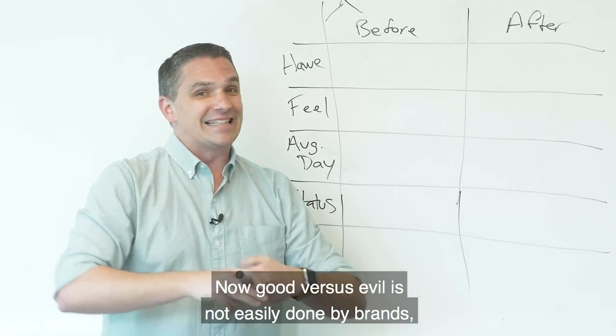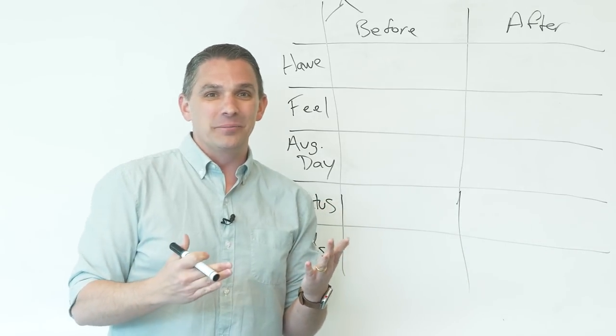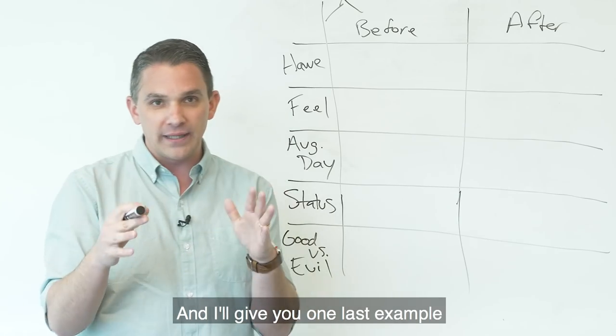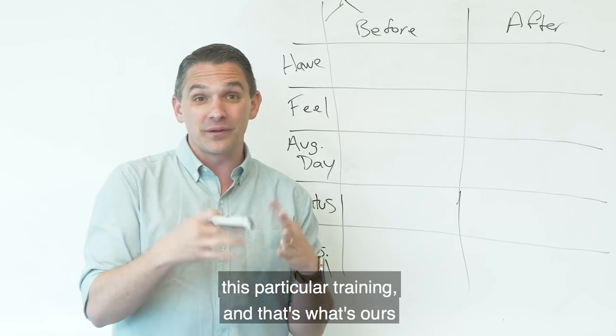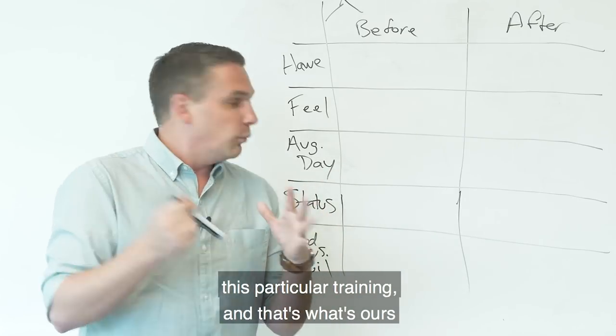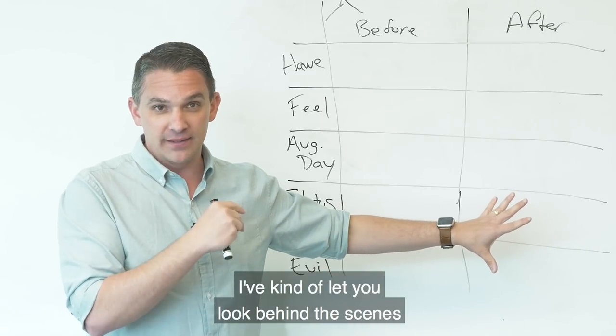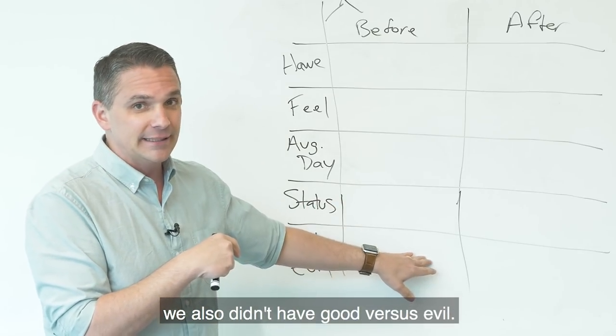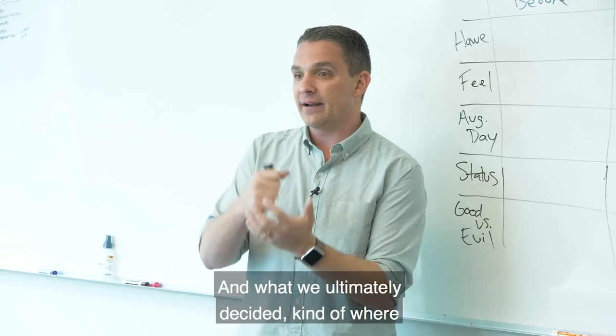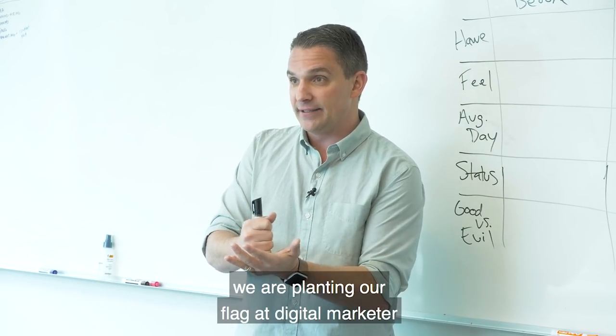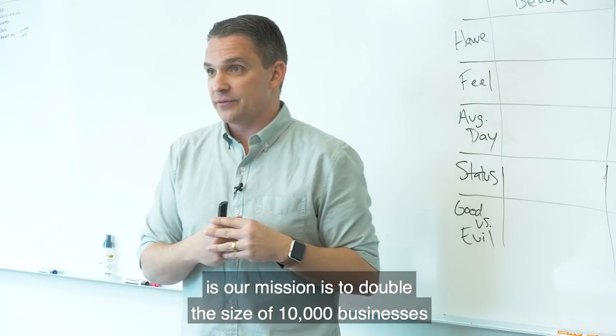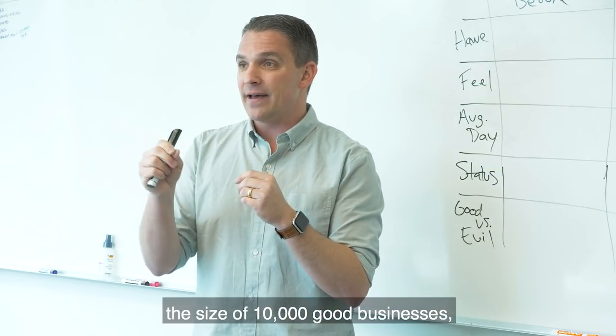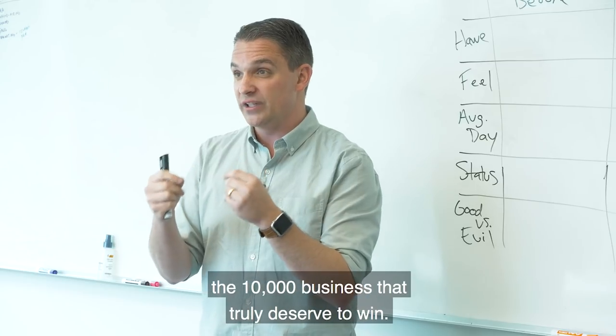Now, good versus evil is not easily done by brands. You may not have this yet, but I would encourage you to continue to search for it. And I'll give you one last example, and then we'll kind of close this particular training. And that's what's ours at Digital Marketer. So I'll let you look behind the scenes just a little bit. Because for us at Digital Marketer, I mentioned before, we didn't have status. We also didn't have good versus evil. And what we ultimately decided and where we are planting our flag at Digital Marketer is our mission is to double the size of 10,000 businesses. But our why, what's beginning to come out more and more is we want to double the size of 10,000 good businesses, the 10,000 businesses that truly deserve to win.